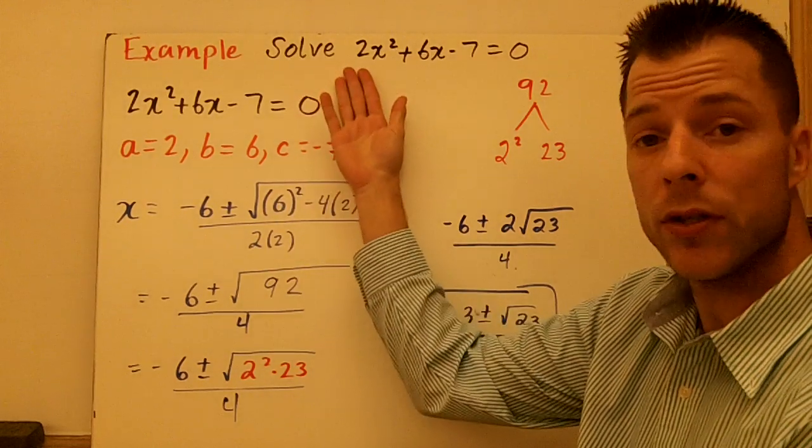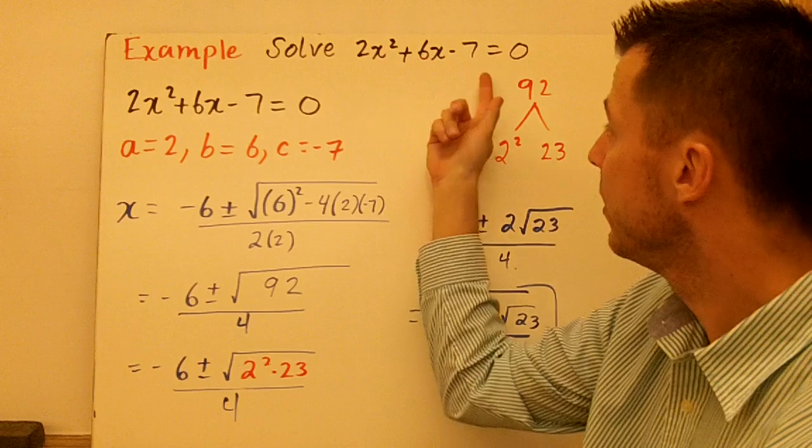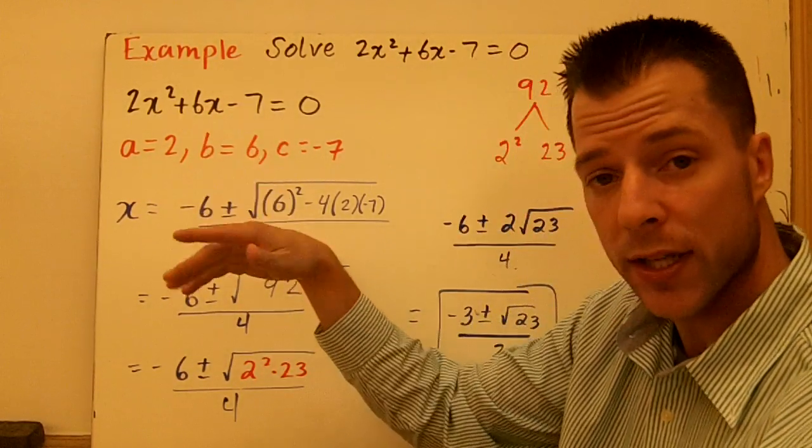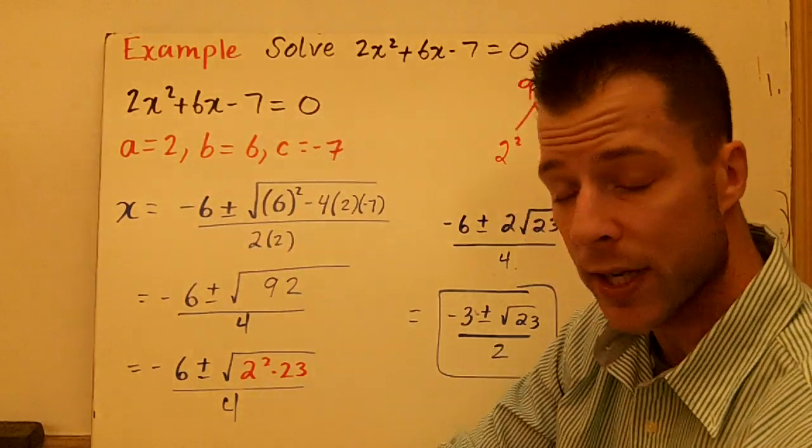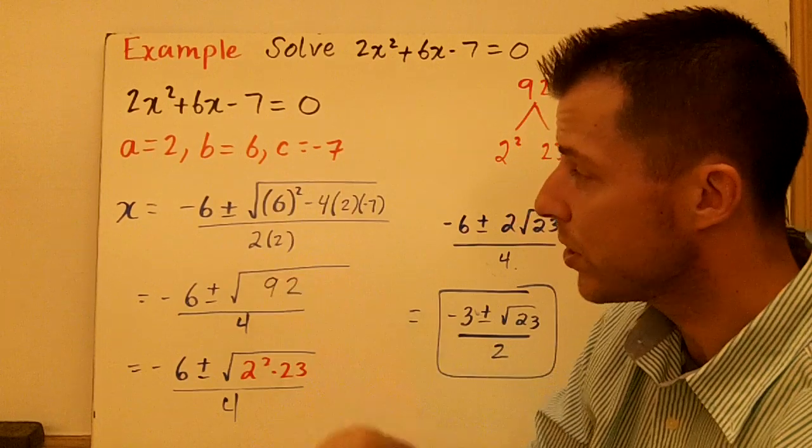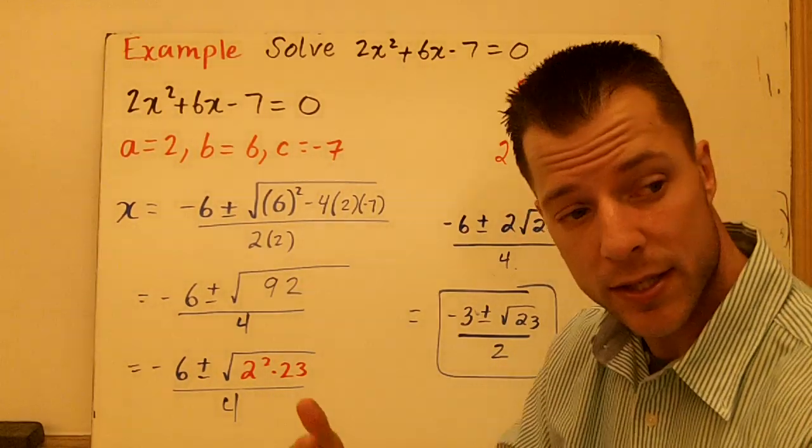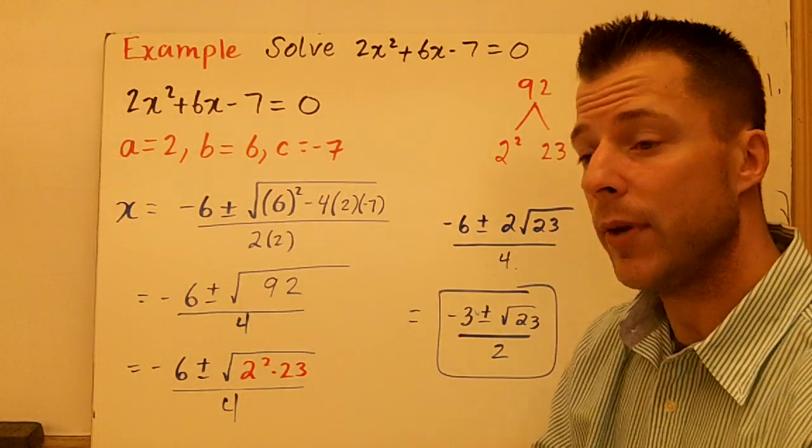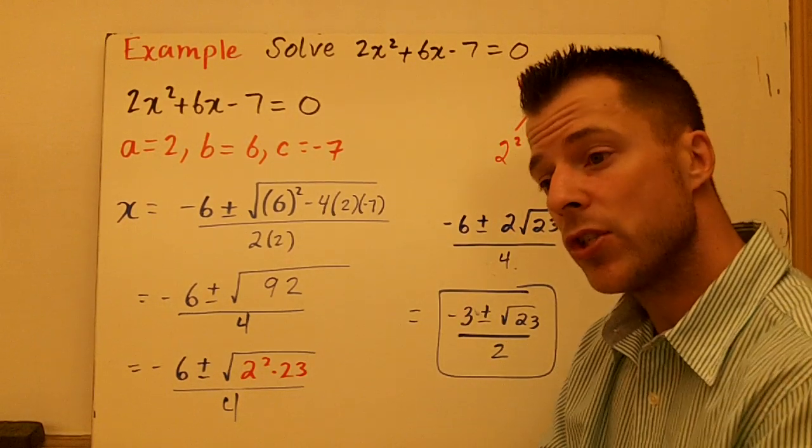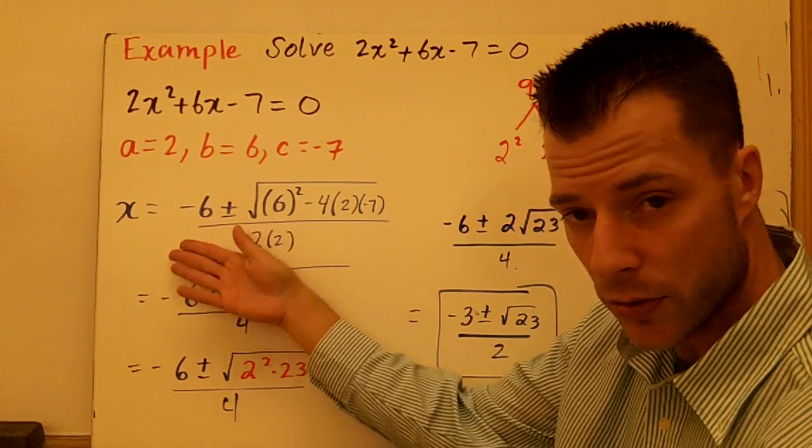Now we're going to solve this quadratic 2x squared plus 6x minus 7 equals 0. Write your quadratic. All the terms are on the left side, equal to 0. Now we can identify a, b, and c, which is what I've done in red. Now I substitute. This process is the same every single example: make sure all your quadratic pieces are on one side, equal to 0, identify a, b, and c, substitute and simplify.